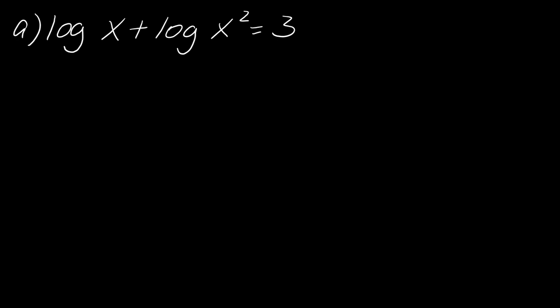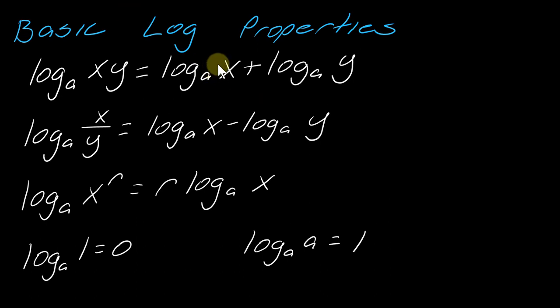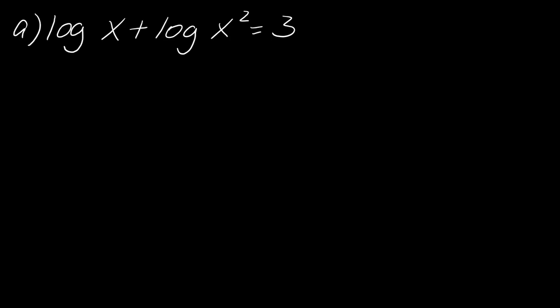So I have log of x plus log of x squared equals three. So the first thing that you want to do is you want to just rewrite this so that you want to get this to be a single log on really the left side. So if two things are being added together, then I can take whatever's here and here and multiply them. So I'm going to rewrite this as log of x times x squared equals three. So that's going to be log of x cubed equals three.